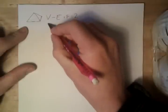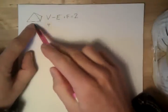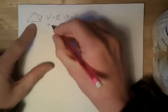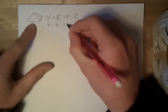So let's try it for the tetrahedron. We've got 4 vertices, and we've got 1, 2, 3, 4, 5, 6 edges, and we've got 4 faces, so that is indeed equal to 2.